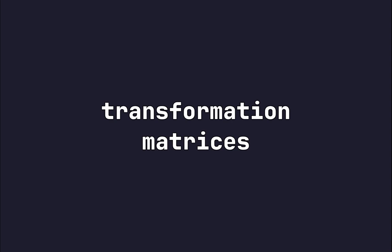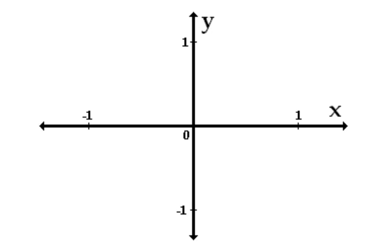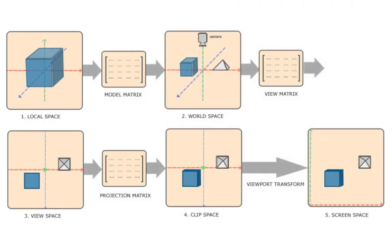Currently we are specifying our vertices in normalized device coordinates, but instead we are going to specify them in some other coordinate system and then go through a bunch of intermediate steps to convert those into other coordinate systems, achieved by multiplying them with different matrices. The first one is the local space, which is what we will specify our vertices in — basically the space in which the center of the object is considered the origin.